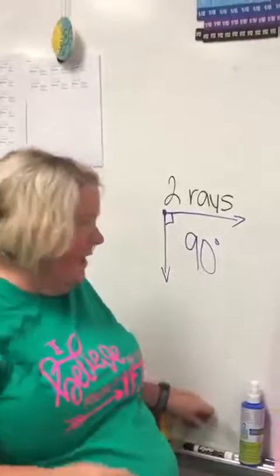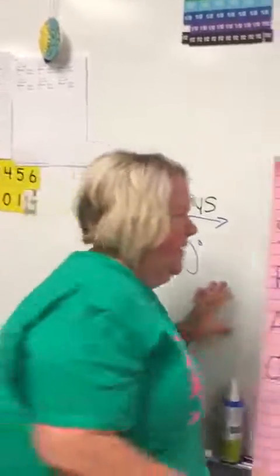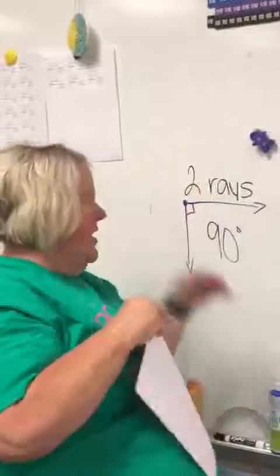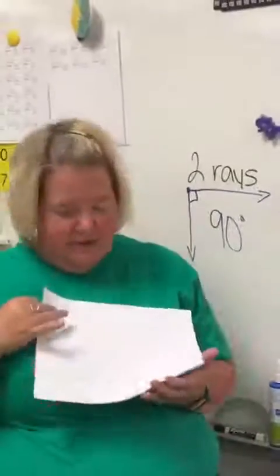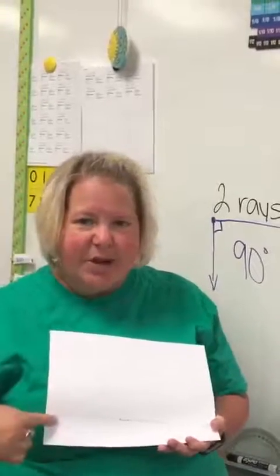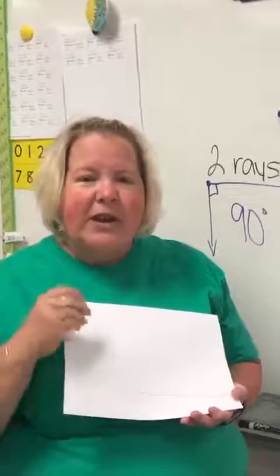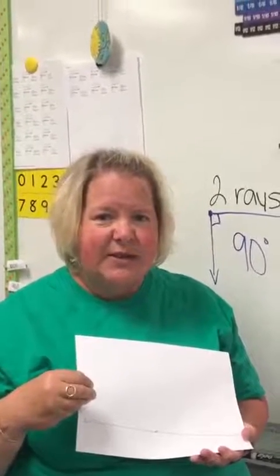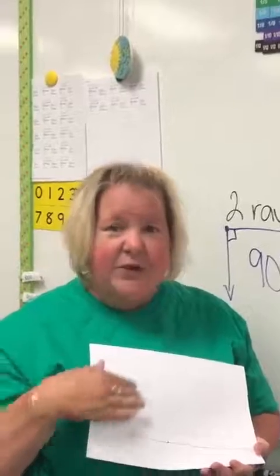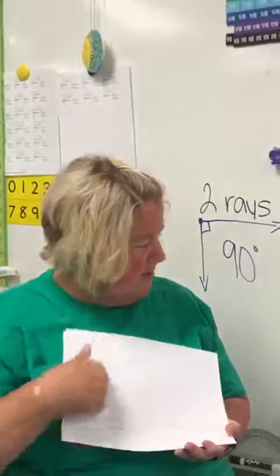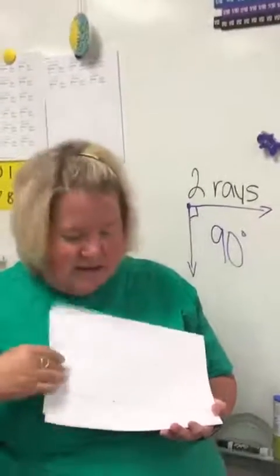Now I have some examples that I'm going to share with you and we're going to discuss what they are. So here is this angle, you'll see it at the bottom of this paper. What kind of angle is this? If you said a straight angle then you are correct. So this is a straight angle, this is an example of a straight angle.